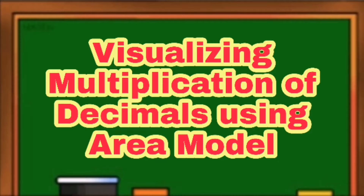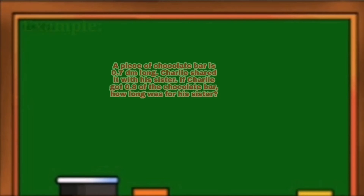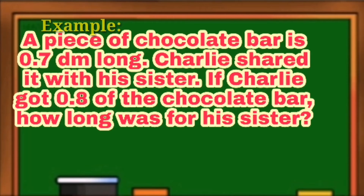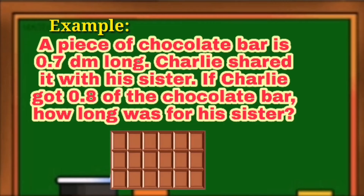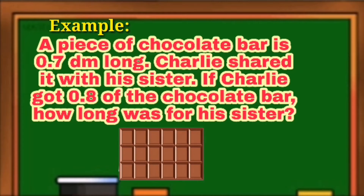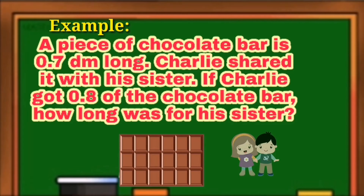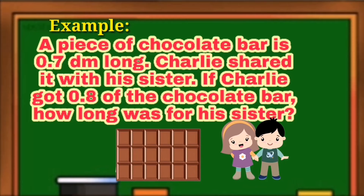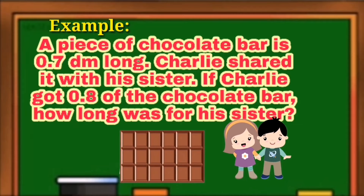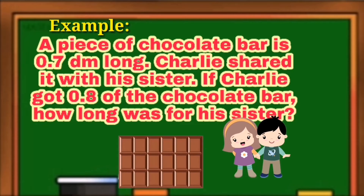Let's start with the problem. A piece of chocolate bar is 7 tenths decimeter long. Charlie shared it with his sister. If Charlie got 8 tenths of the chocolate bar, how long was for his sister?